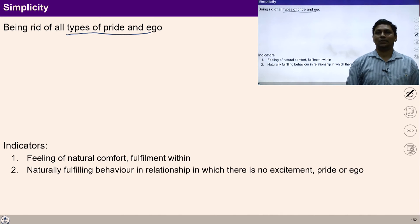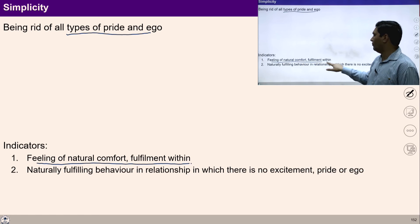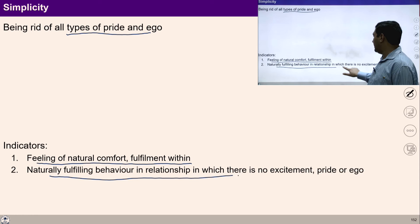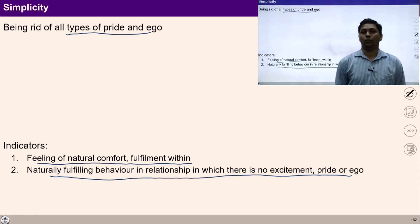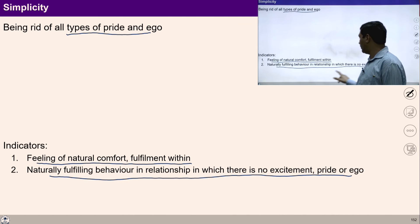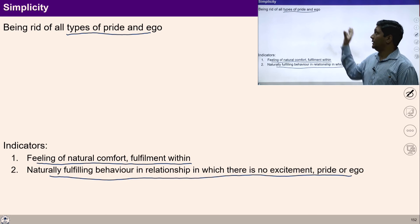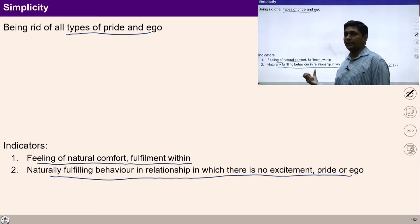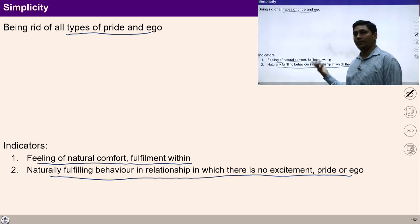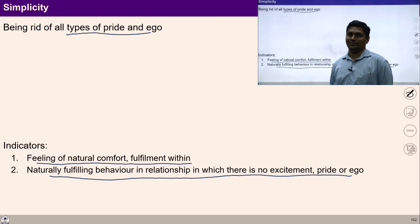The indicators of simplicity are: first, a feeling of natural comfort and fulfillment within me; and second, naturally fulfilling behavior in relationships with no excitement, no pride, no ego — because I know this is my participation, my duty and obligation. I am participating with human beings and the rest of nature, free from ego and excitement. This is simplicity. For a harmonious society, simplicity in everyone is required — as is affection and non-accumulation in everyone.